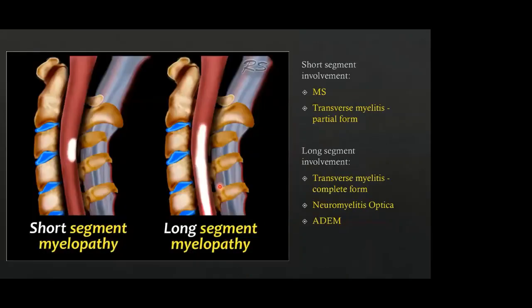Characterizing myelopathy: first determine whether it is short segment or long segment. Short segment myelopathies span less than three vertebral body segments in craniocaudal dimension, and are commonly seen in MS and the partial form of transverse myelitis. Long segment myelopathies span more than three vertebral body segments and are usually seen in the complete form of transverse myelitis, neuromyelitis optica, and acute disseminated encephalomyelitis.